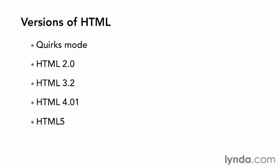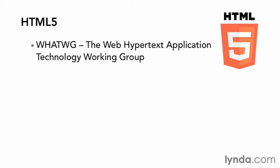Fourteen years after the ratification of HTML 4, HTML 5 is still a work in progress. When the W3C voted to stop working on new versions of HTML in 2004, the Mozilla Foundation and Opera Software formed a new group called WhatWG — the Web Hypertext Application Technology Working Group — to work on a new standard version of HTML. Meanwhile, the W3C was working on XHTML 2.0, intended to drive web development into a more standards-compliant world. The web development community did not respond well to this effort, and the W3C dropped XHTML 2 in 2009 and began working with the WhatWG on HTML 5 instead.